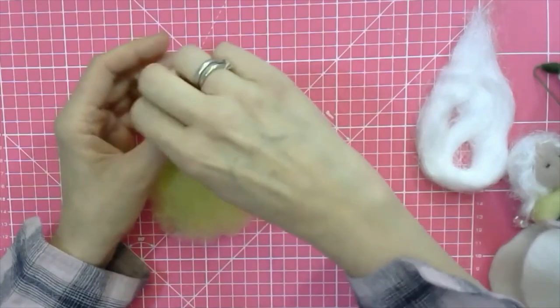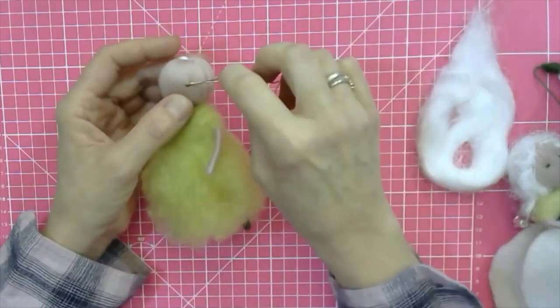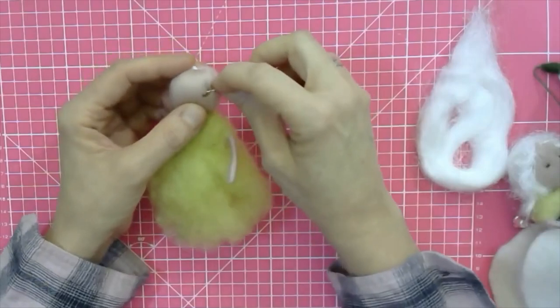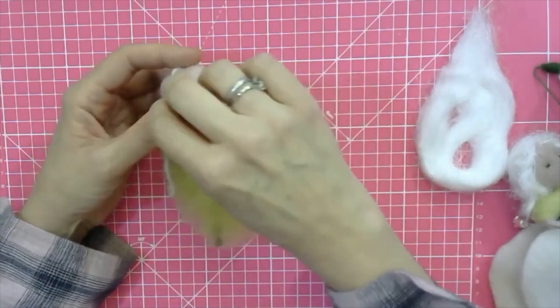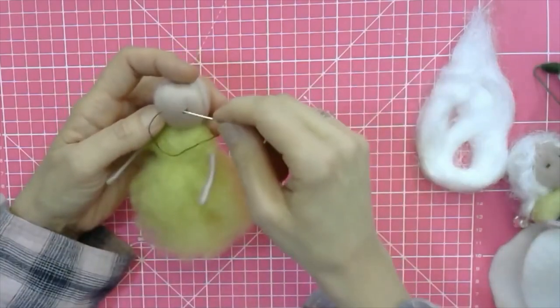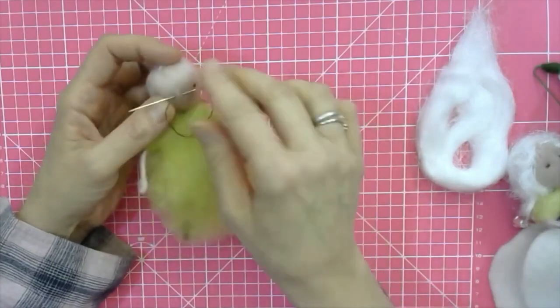You just go in and out in a loop twice or three times. And then you go across to the other side where the second eye will be and repeat that. Make sure that your loops are nice and even, and then repeat this on that side.